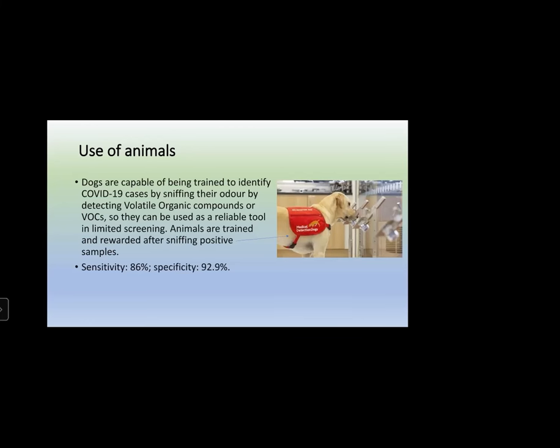Dogs are first trained using positive control and non-negative samples to establish their reaction pattern, then rewarded when they correctly identify positive samples, building a memory-based reflex. The sensitivity is about 86% and specificity is 92.9%. In these cup-like instruments, the sample is kept and the dogs take the smell.